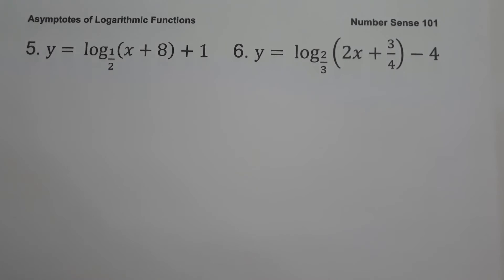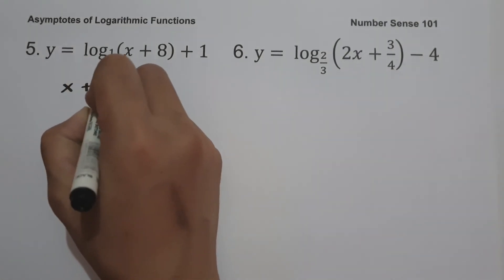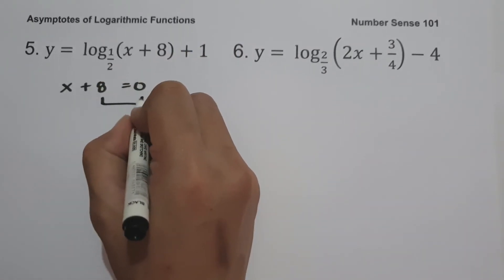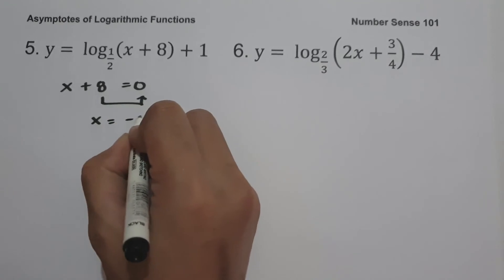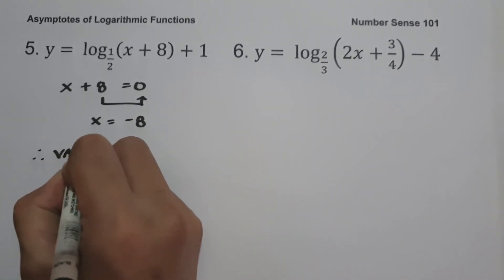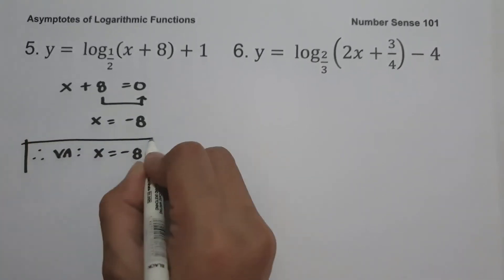On example number five: y equals log base 1/2 of (x plus 8), plus 1. To find the vertical asymptote, let us equate the argument equal to zero. So we have x plus 8 equal to zero. Moving positive 8 to the other side gives us x equals negative 8. Therefore, our vertical asymptote is x equals negative 8, and this will be our answer.